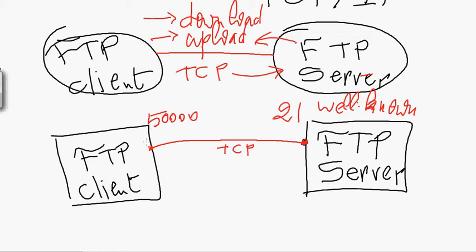This process establishes a connection with the FTP server. The purpose of this first connection is to send commands — either requesting a file from the FTP server or uploading a file to it. This first TCP connection is dedicated to commands: you use it to send orders to the FTP server to initiate a download or upload.